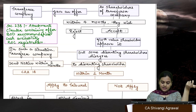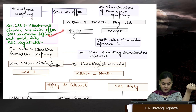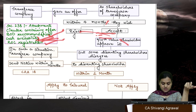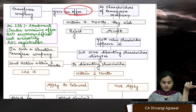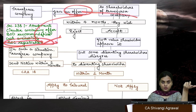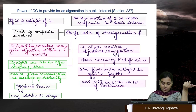Section 238 tells us about the attachments when a transferee company gives an offer — it must contain the board of directors' recommendation, a statement that adequate cash will be available, and confirmation that we have registered the circular with ROC. Whatever offer you are giving, you must also register it with ROC. If ROC refuses to register, you cannot proceed to make an offer. There is a penalty of 1 lakh for non-compliance.